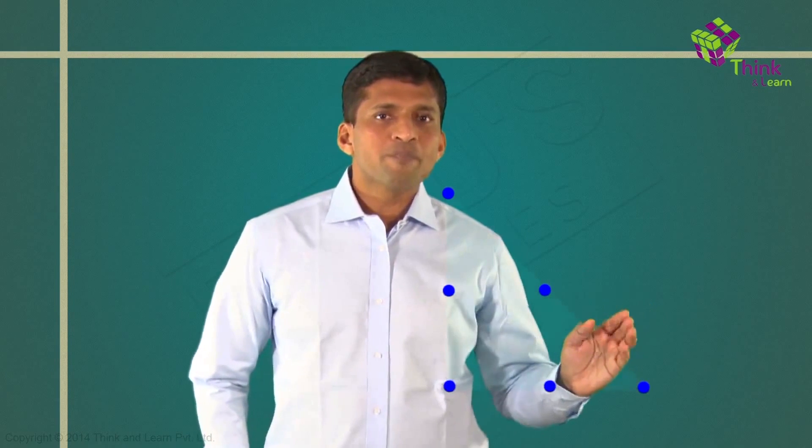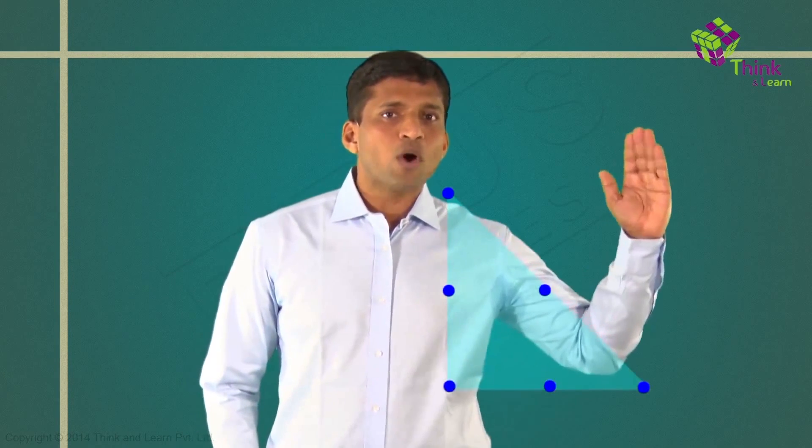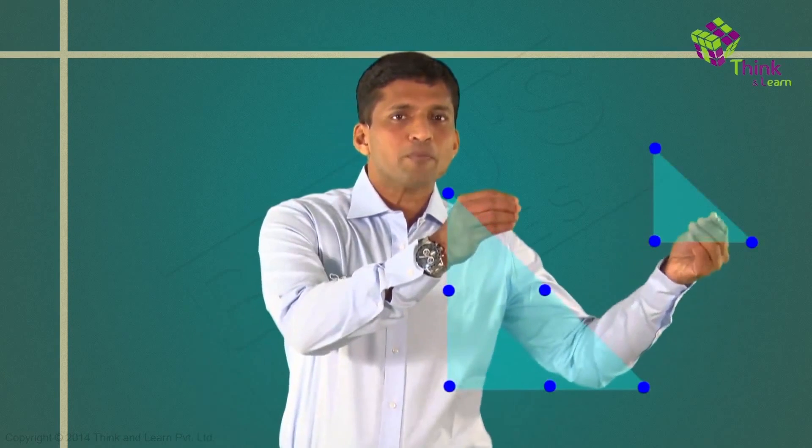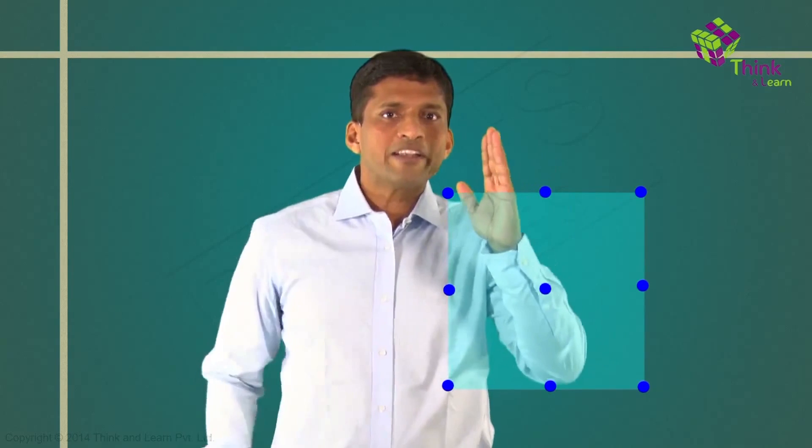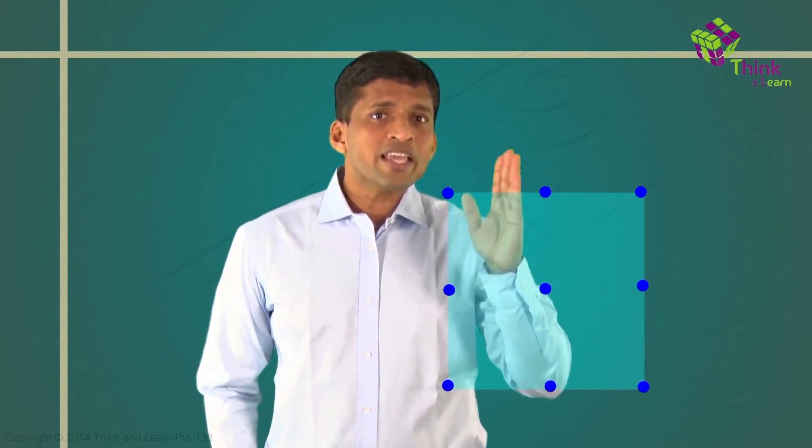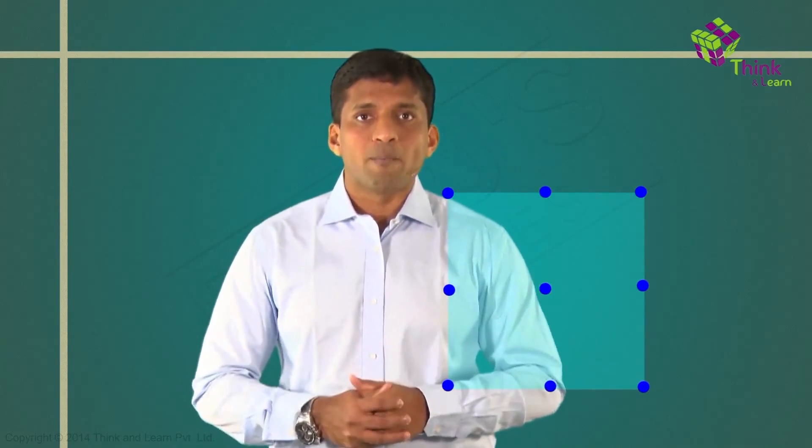Let's visualize the addition of two triangular numbers. If I take the triangular number 6 (rows of 1, 2, 3) and the previous triangular number 3 (rows of 1, 2), flip it upside down and place it alongside, I get 3 rows of 3 — which is 9. So 9 equals 3 plus 6, and 9 is a square number. This is a great example of why geometry is nothing but number patterns visualized.